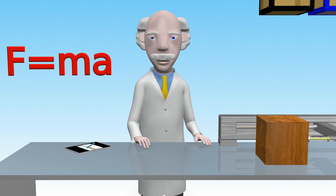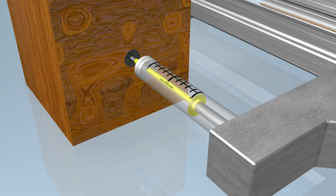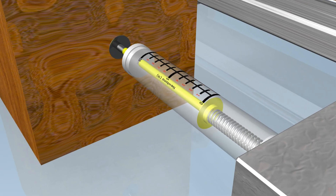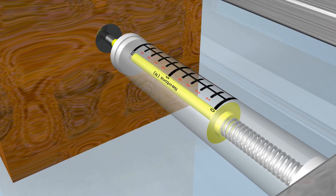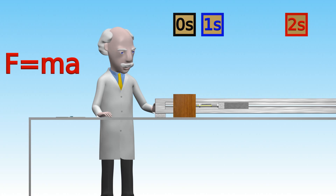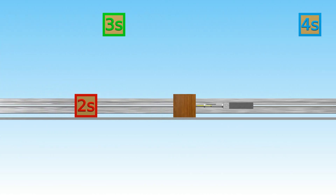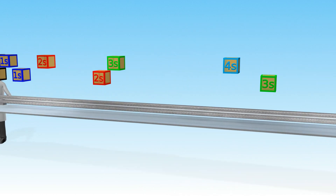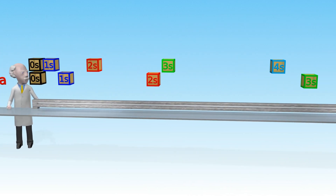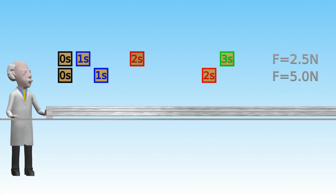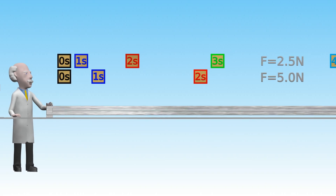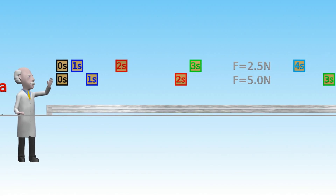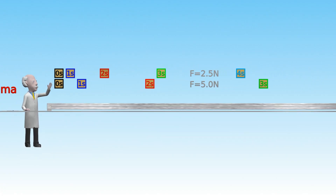So what will happen if we apply a force twice as large? Let's apply a force of five newtons to the block and see what happens. Looking at the snapshots at one second intervals, you can see how the block has moved a further distance for each second under the action of the larger five newtons force.